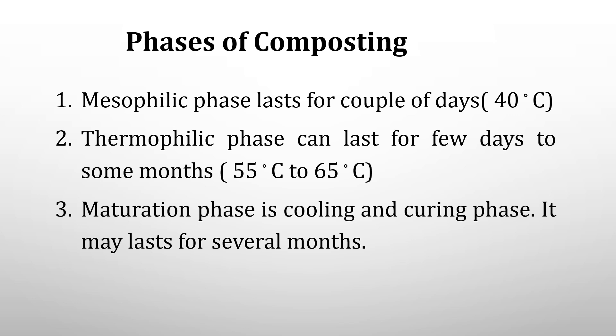There are three different phases of composting: the mesophilic phase, the thermophilic phase, and the maturation phase. The mesophilic phase lasts for a couple of days and the temperature is around 40 degrees Celsius. The thermophilic phase can last for a few days to some months, with temperatures around 55 to 65 degrees Celsius. The third, the maturation phase, is also known as the cooling and curing phase, and may last for several months.